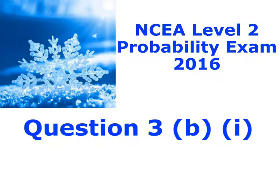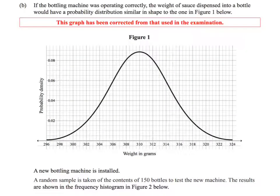Here's question 3b, part 1. So we've got some information here. We've got a graph talking about if the machine works correctly, then the weight should have a distribution that looks like the one below.